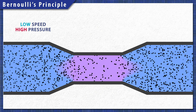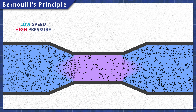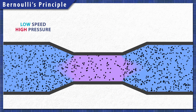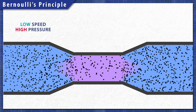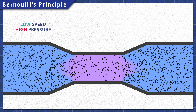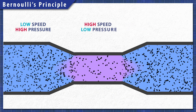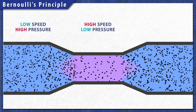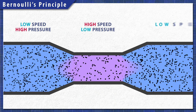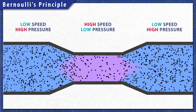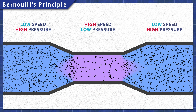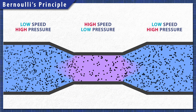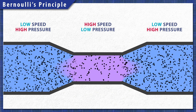Bernoulli's principle describes the relationship between the speed and pressure of any fluid. When the speed of a fluid increases, its pressure decreases. And when the speed decreases, its pressure increases. This is the very same principle that allows airplanes to fly.